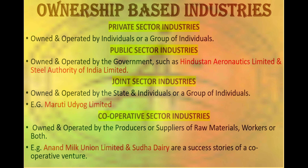On the basis of ownership, industries are of four types. First, private sector, which is owned and operated by individuals. Second, public sector, which is owned and operated by government, like HAL. Thirdly, joint sector industries, owned and operated by state and individuals, like Maruti Udyog Limited. And lastly, cooperative sector industries, owned and operated by producers or suppliers of raw material, workers, or both — example Anand Milk Union Limited.